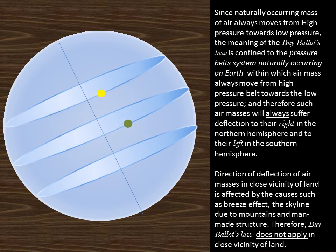Since naturally occurring mass of air always moves from high pressure towards low pressure, the meaning of the Buy-Ballot's law is confined to the pressure belt system naturally occurring on Earth within which air mass always move from high pressure belt towards the low pressure, and therefore such air masses will always suffer deflection to their right in the northern hemisphere.